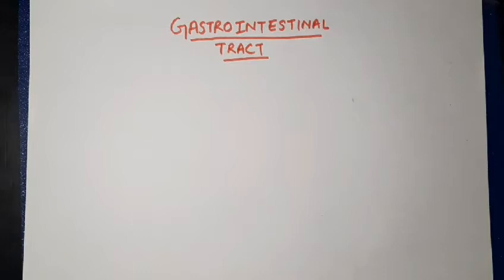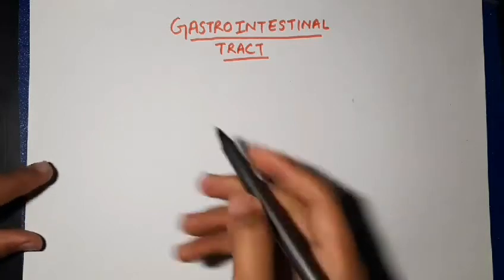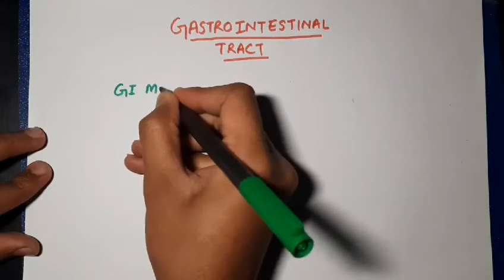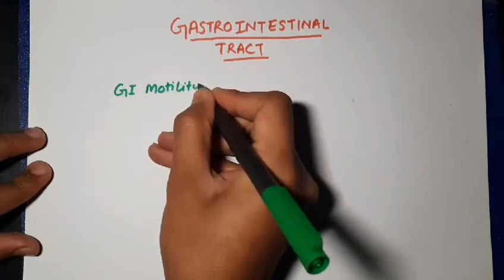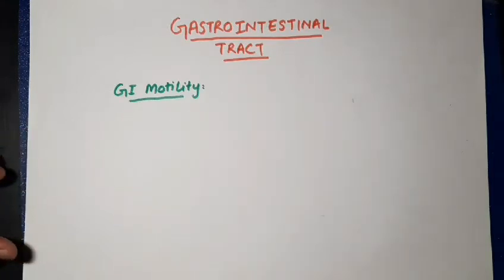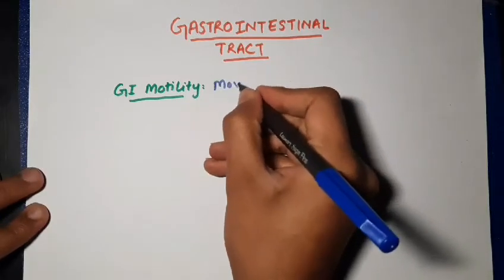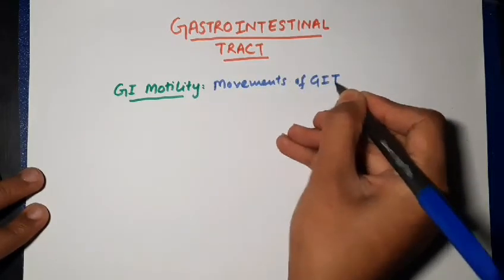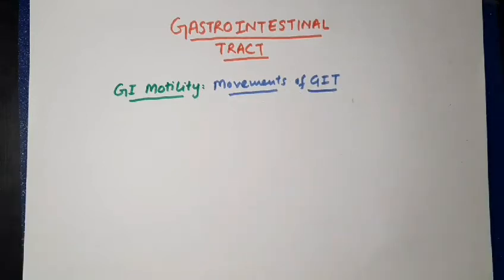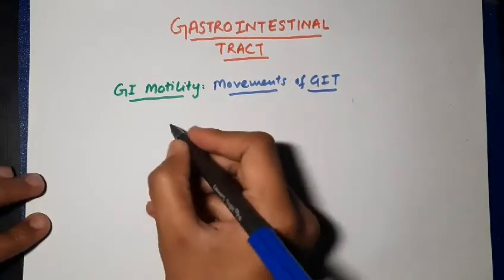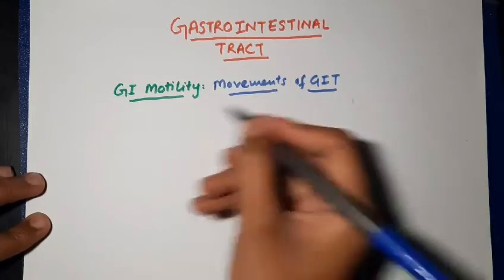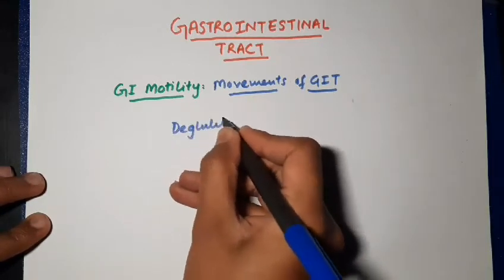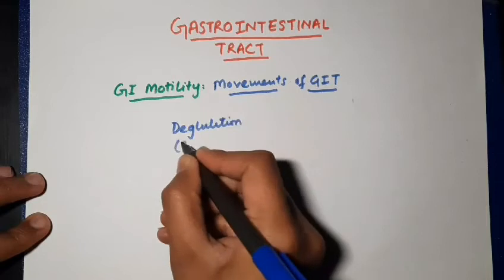In this section we are going to start a new topic of physiology: the gastrointestinal tract. We will start with the most important topic from this chapter, which is called gastrointestinal motility. It simply means the movements of the gastrointestinal tract. There are different parts in the gastrointestinal tract, so the movements are to be discussed separately for each part.